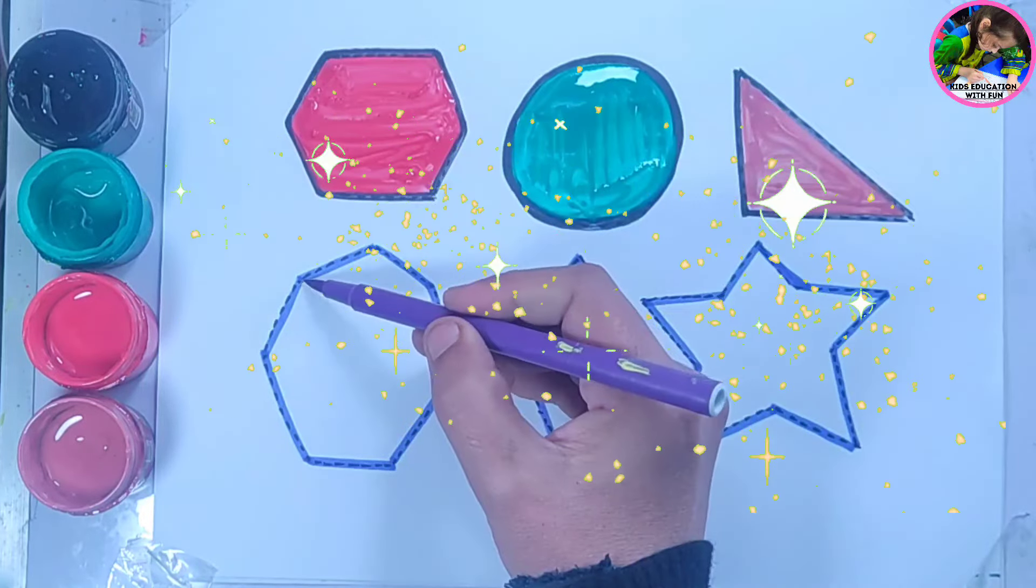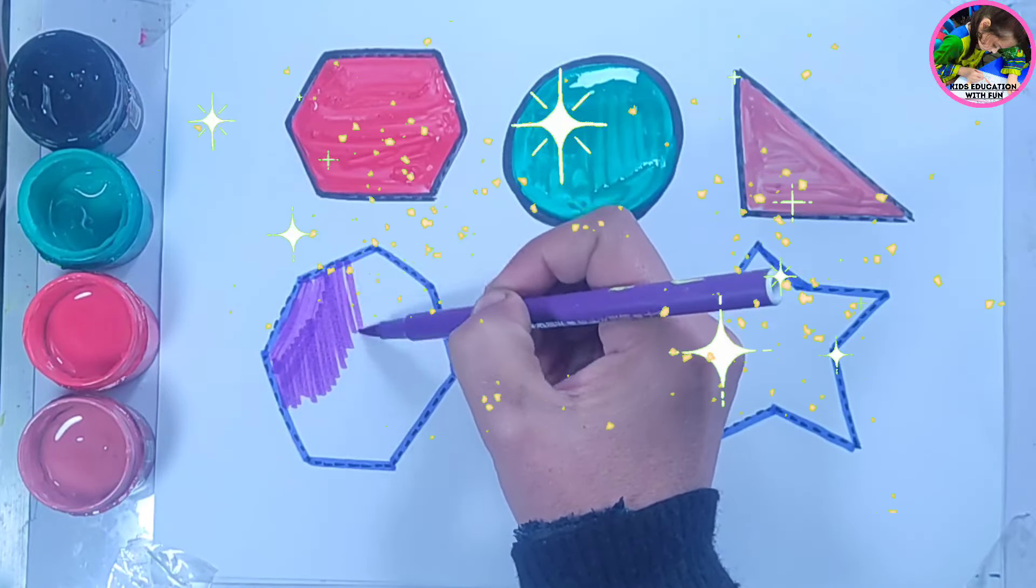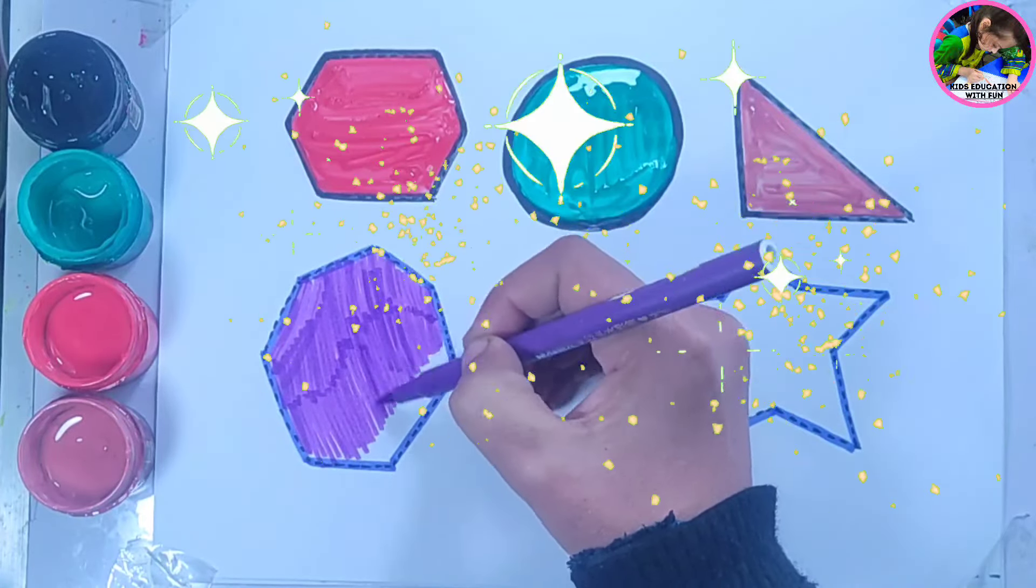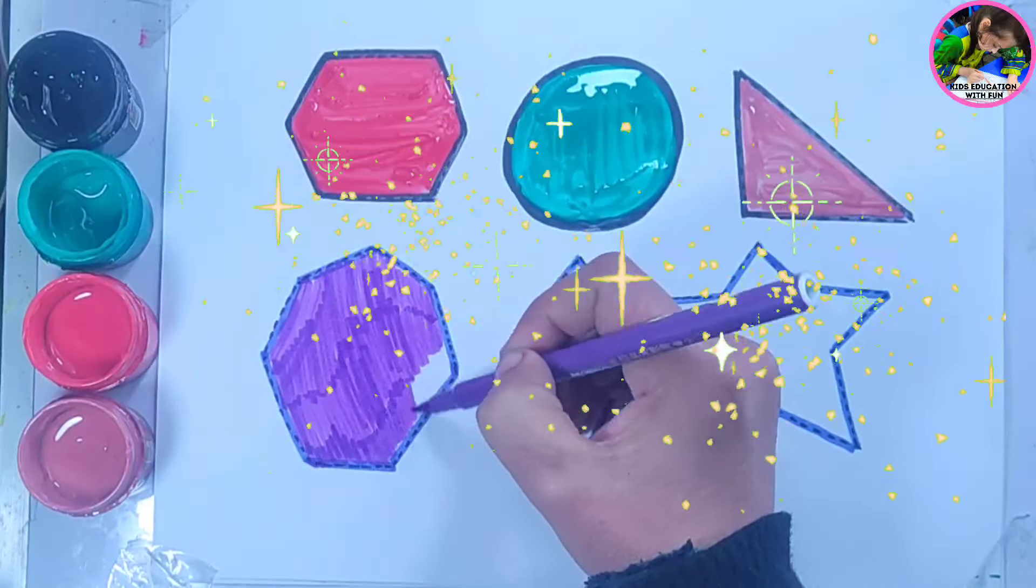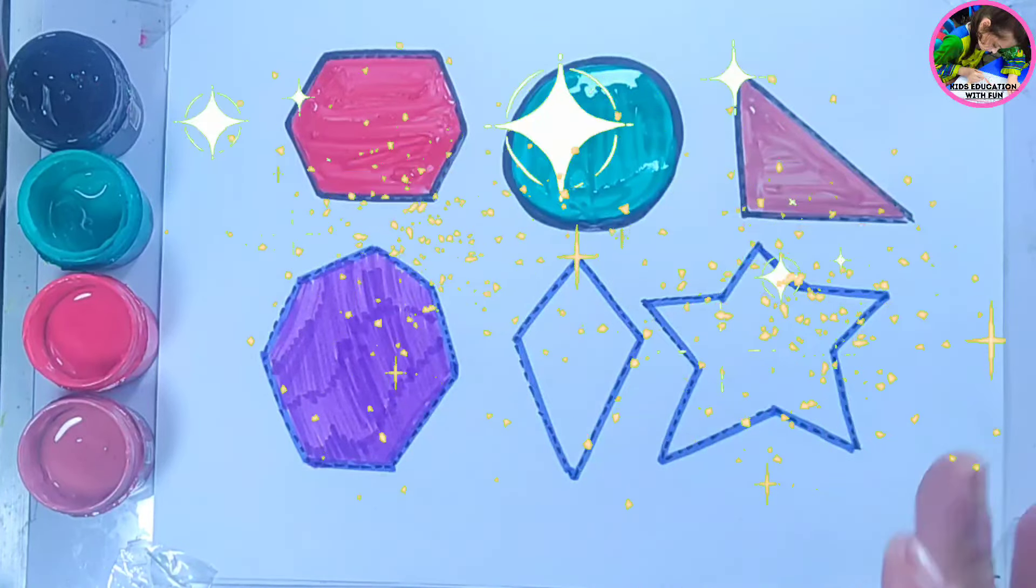Violet color. Violet color, heptagon, 7 sides.